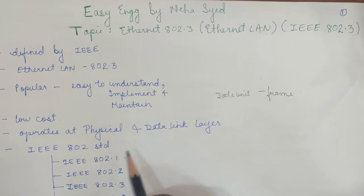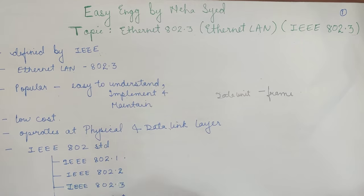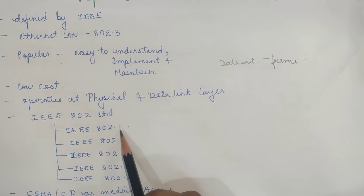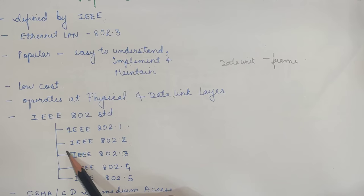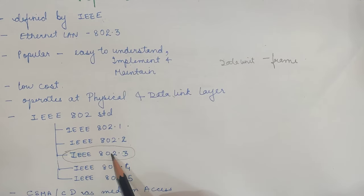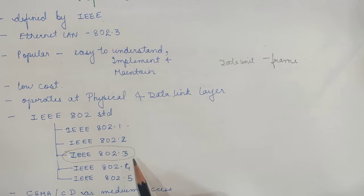IEEE has produced many standards for LANs known as the IEEE 802 standard. These standards include IEEE 802.1, 802.2, 802.3, and 802.5. In this lecture, we are mainly going to focus on 802.3, which is Ethernet LAN.